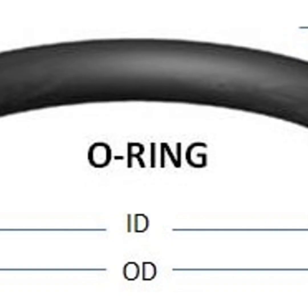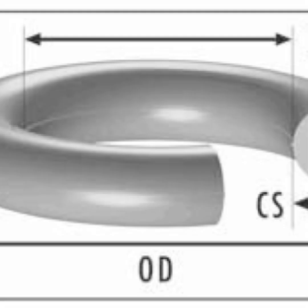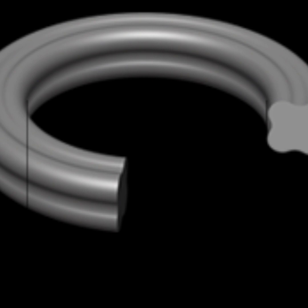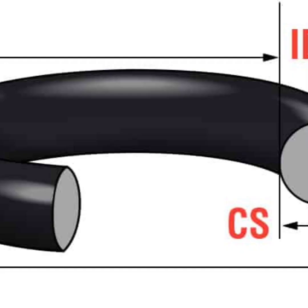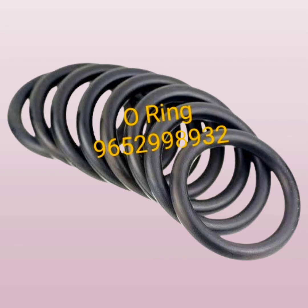In plumbing and HVAC, O-rings are commonly used in plumbing systems to create watertight seals between pipes and fittings. In faucets and valves, O-rings are used in faucets, valves, and other plumbing fixtures to prevent leaks around moving parts.